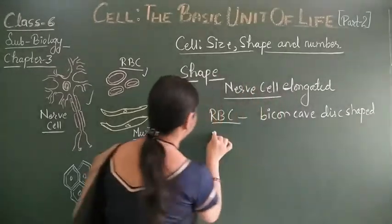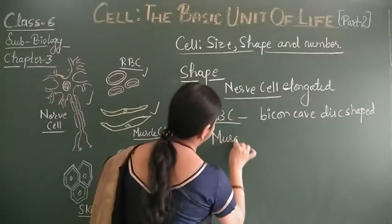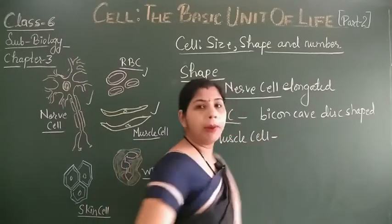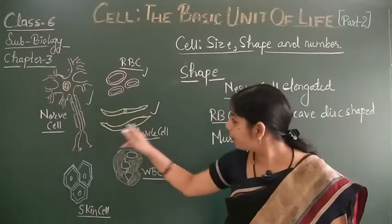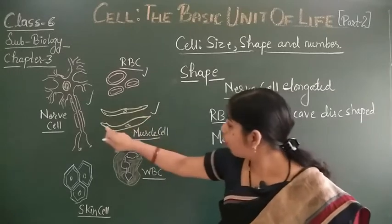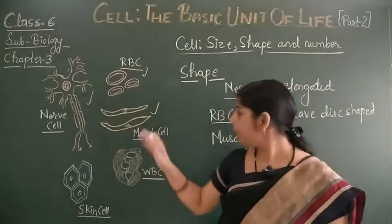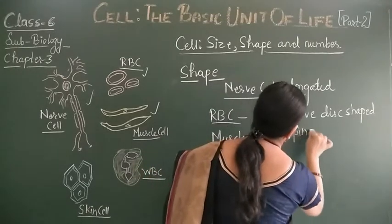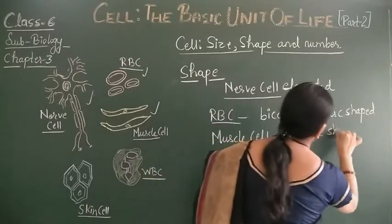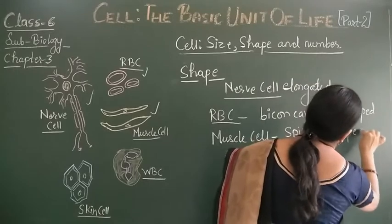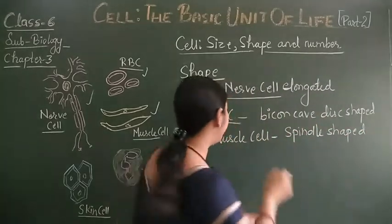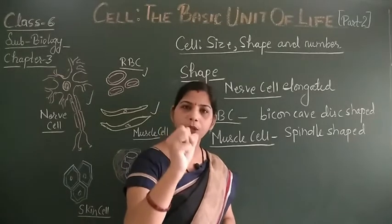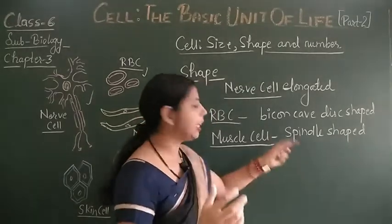Next is the muscle cell. Muscle cells are spindle shaped, where the corners are small. They are spindle shaped because they are contractile — sometimes they expand — and they help in movement.